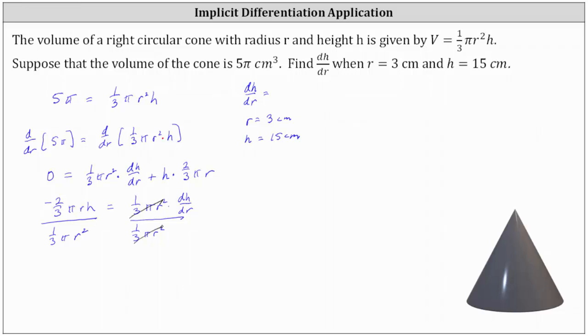Simplifying, we have dh/dr equals—we'll notice π divided by π simplifies to one, and r divided by r squared simplifies to one factor of r in the denominator, and negative two-thirds divided by one-third simplifies to negative two. Simplifying, we have negative 2h divided by r.